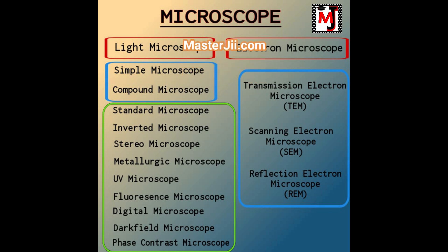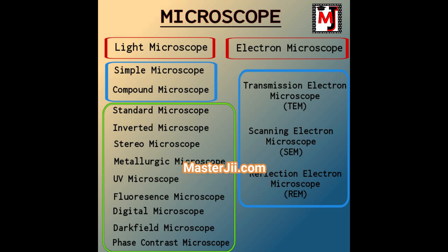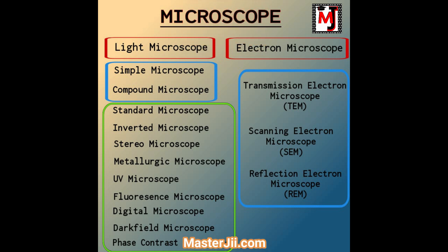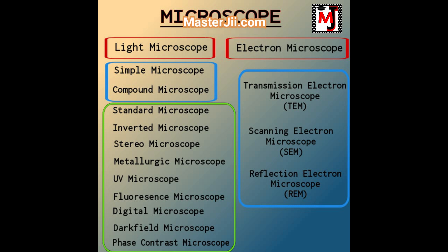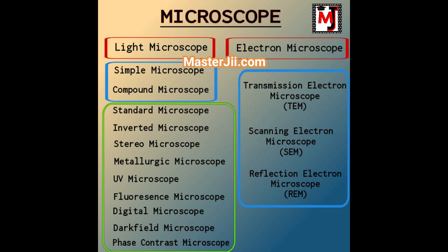There are further three types of electron microscope: transmission electron microscope (TEM), scanning electron microscope (SEM), and reflection electron microscope (REM). Similarly, there are two types of light microscope: simple microscope and compound microscope. Compound microscopes have further different varieties and types, including standard microscope, inverted microscope, stereo microscope, metallurgic microscope, UV microscope, and fluorescence microscope.